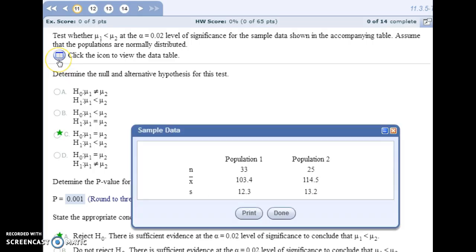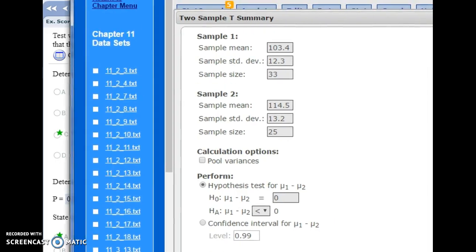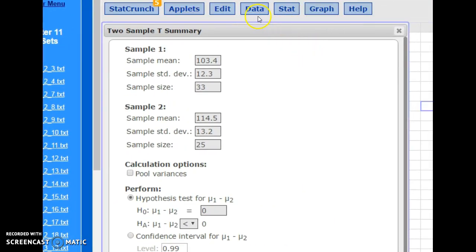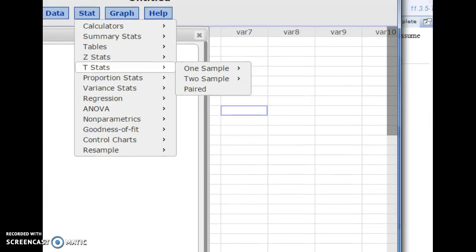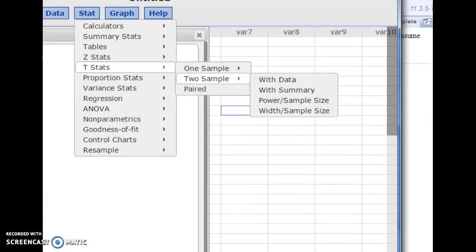So I'm going to jump into StatCrunch using this data here, and you should go to Stat, T Stats, Two Samples, and then With Summary. With Summary, and then you enter in the summary statistics.